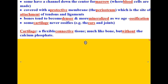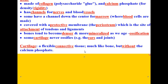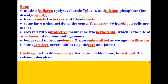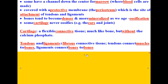Cartilage is a flexible connective tissue. It's much like bone, but it lacks the calcium phosphate, so cartilage is mostly made of collagen. Tendons and ligaments are also fibrous connective tissue. Tendons connect muscles to bones. Ligaments connect bones to bones. You need to know the difference between those two.